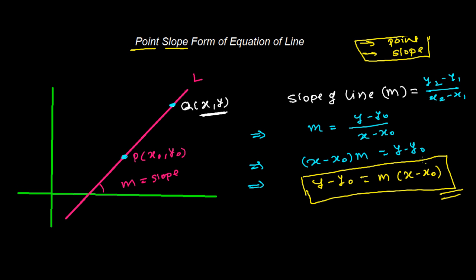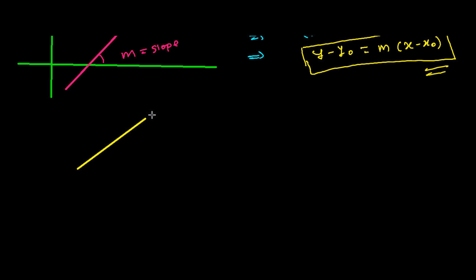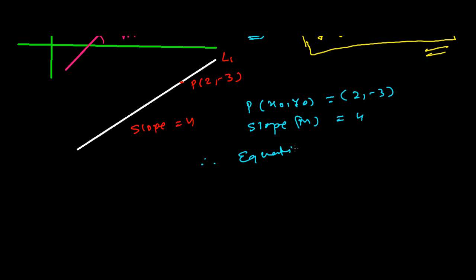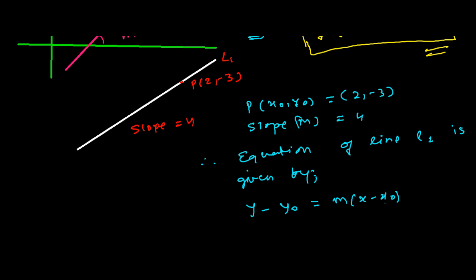Let me give one example based on this. Suppose we have a line L1 passing through the point P(2, -3) and having a slope of 4. So x0 = 2, y0 = -3, and m = 4. The equation of line L1 is given by y - y0 = m(x - x0).